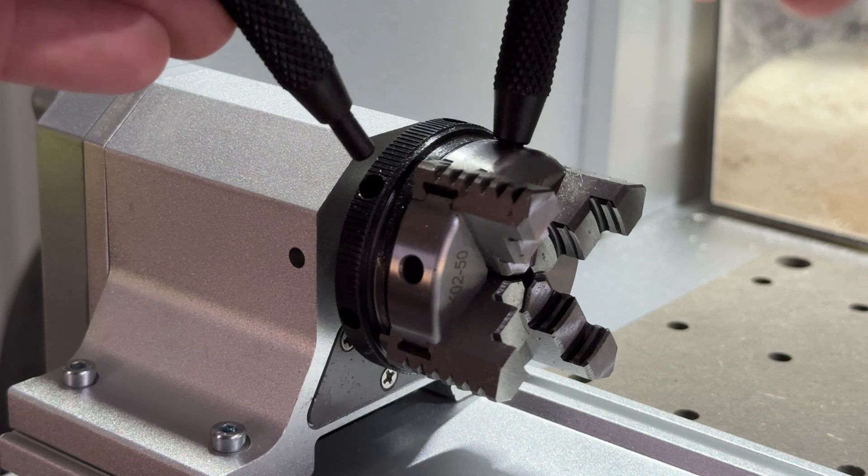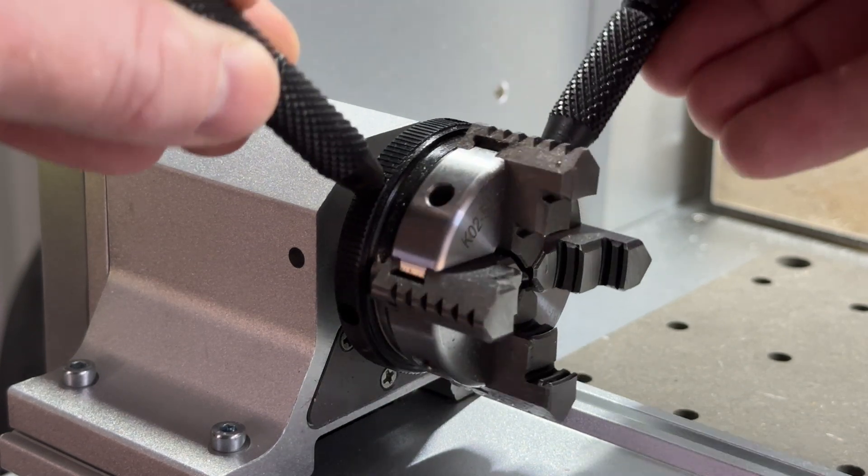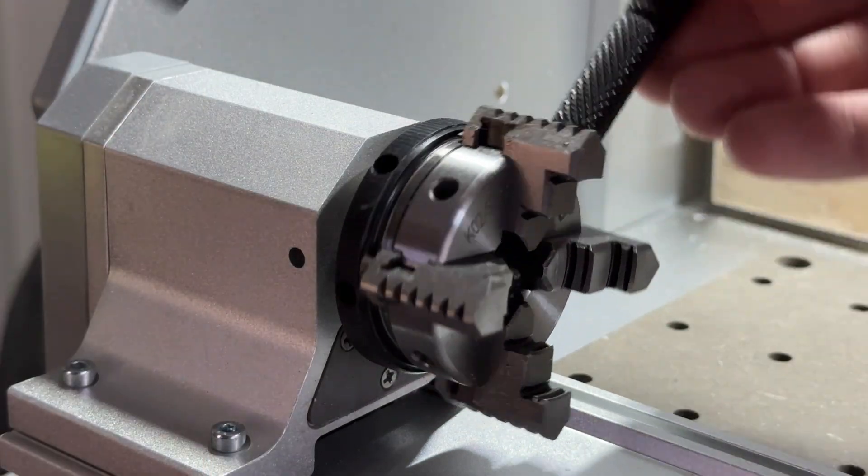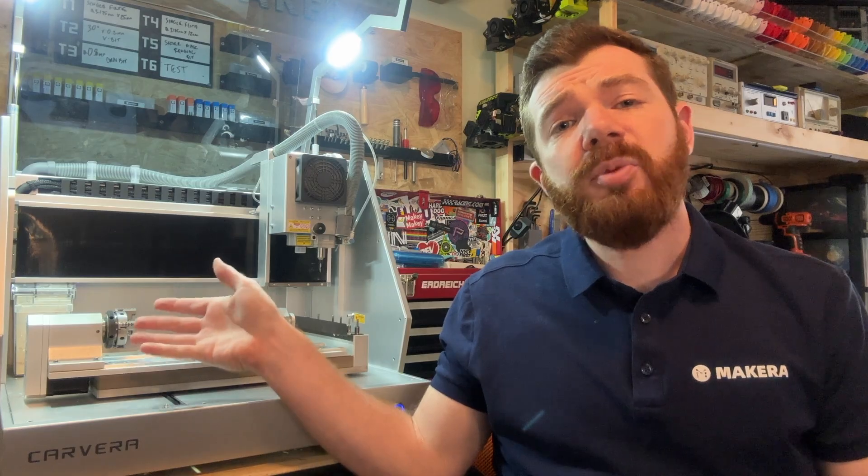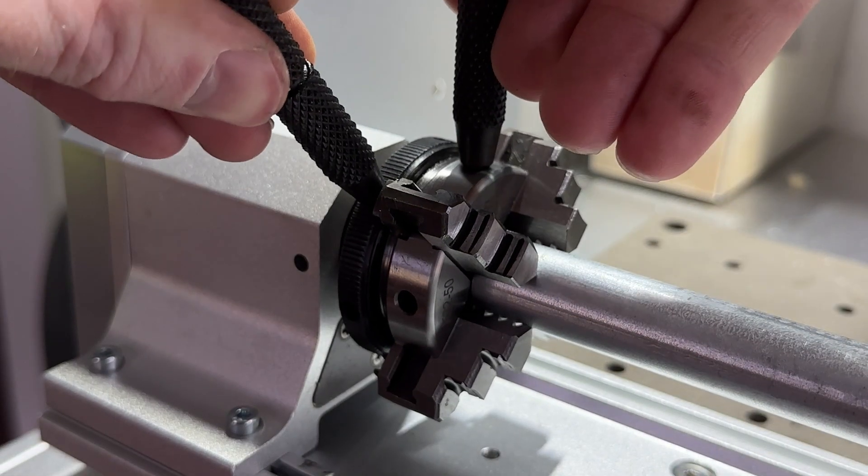The chuck jaws of the rotary module can be tightened and loosened using the two wrenches provided. Rotating the wrenches towards each other tightens the chuck while rotating the wrenches away from each other will loosen or open the chuck more. The chuck jaws can also be installed in two different configurations so you can hold a wider range of stock sizes.